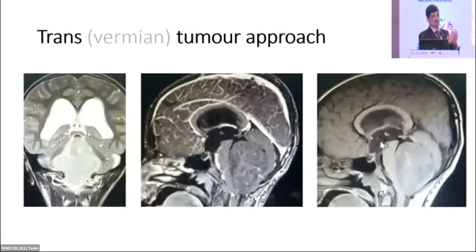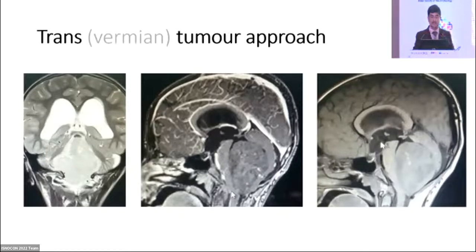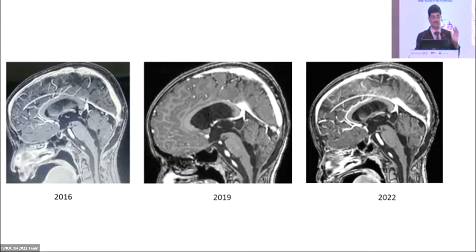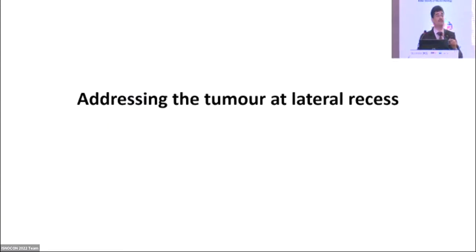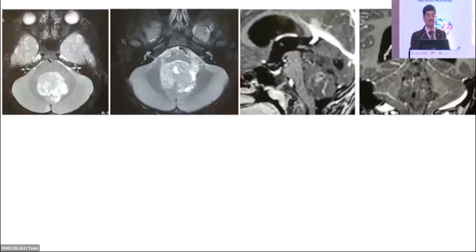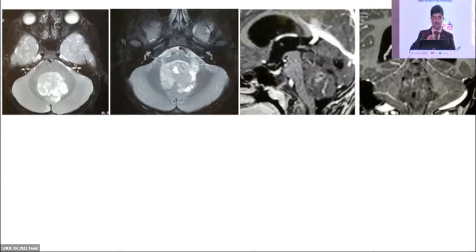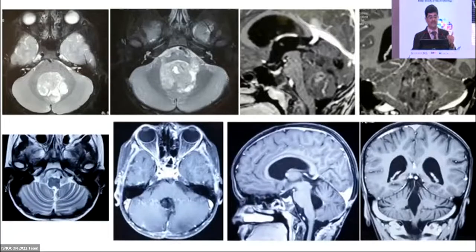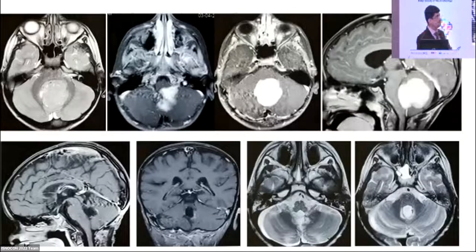If the tumor is huge and already extends out, it's not really transvermian — the tumor itself gives the way. Large tumors are actually easier than small tumors because they provide natural access. Post-op resection images from 2016 and 2019 show good disease control. Toward the foramen of Luschka, we need to be careful — there is often a tiny nodule on the left side. One needs to angle the microscope; these nodules are usually not adherent and come out gently. We must be careful because lower cranial nerves exit through the foramen of Luschka.